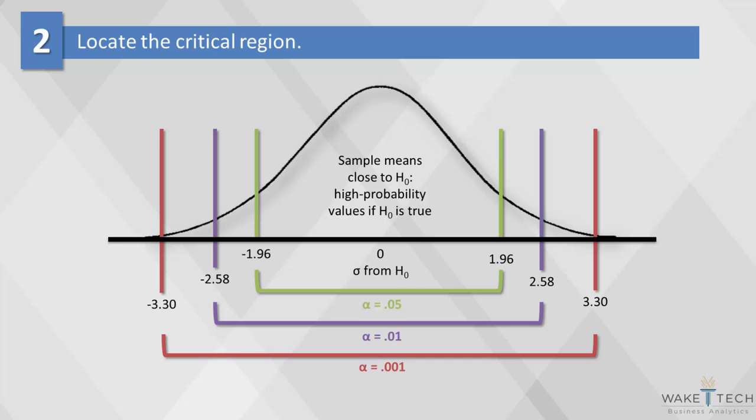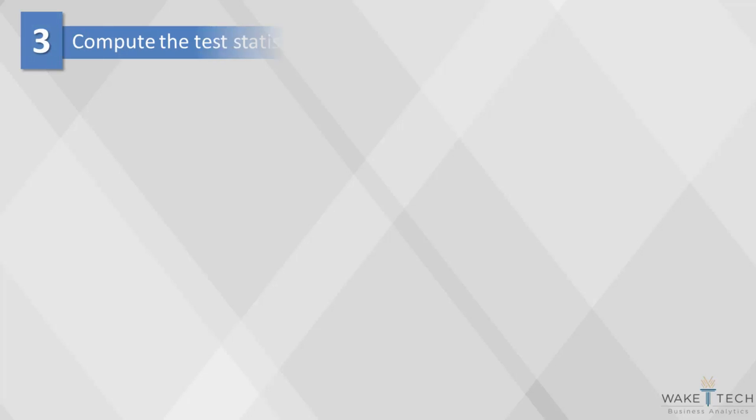For example, if alpha is .05, our result is significant if it's less than .05. Once we decide whether we want to measure accuracy at the 10%, 5%, or 1% level, we can compute the test statistic.